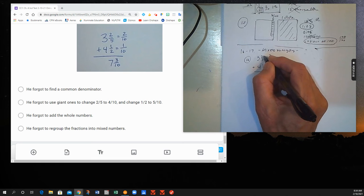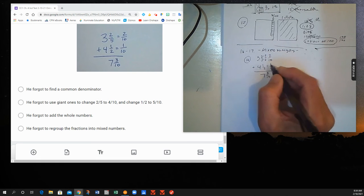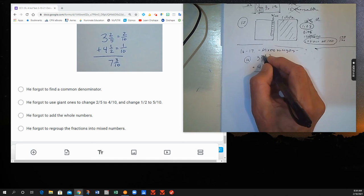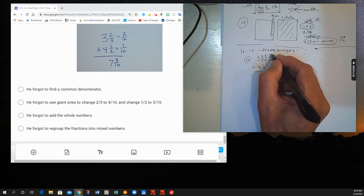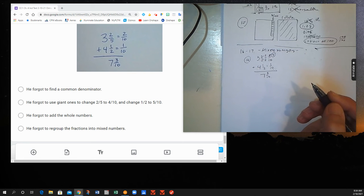And so here's a place where we need to use our giant ones. To make the 5 into 10, we're multiplying by 2. So to make the 2 into something out of 10, we also multiply by 2. This should be a 4.